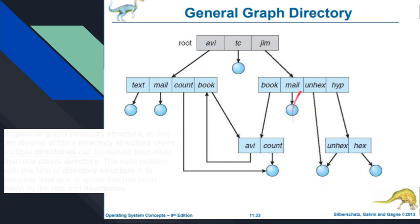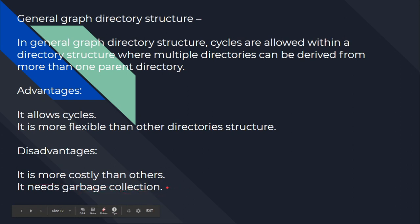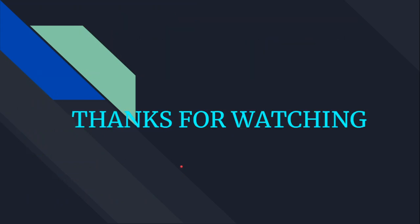Cycles mean this will be referenced repeatedly. HAIP is a subdirectory, unhex is a file, and again unhex is the file — this forms a closed path in the graph. In a general graph directory, cycles are allowed within the structure where multiple directories can be derived from more than one parent directory. The advantage is it allows cycles and is more flexible than other directory structures. The disadvantage is it is more costly and needs garbage collection — after deleting directories, all references should be deleted, otherwise the leftover garbage data will cause problems in the links.